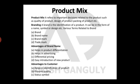Let's talk about Product Mix first. It refers to the important decisions related to the product, such as the quality of the product, design of the product, and packaging of the product. All four Ps are important, but the quality of the product is very important — what branding we are giving, what kind of labeling we are doing, how the packaging is done. All of this is included in Product Mix. First we will discuss branding.